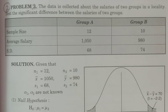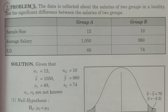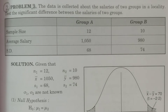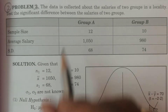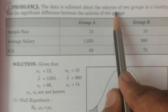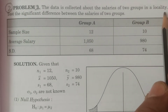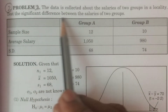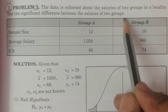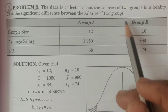Welcome to BSc Statistics students. In this class I will explain one more problem in the t-test for two means — a small sample test. You see here the problem: data is collected about the salaries of two groups in a locality. We need to test the significance difference between the salaries of the two groups. It is a very simple question.